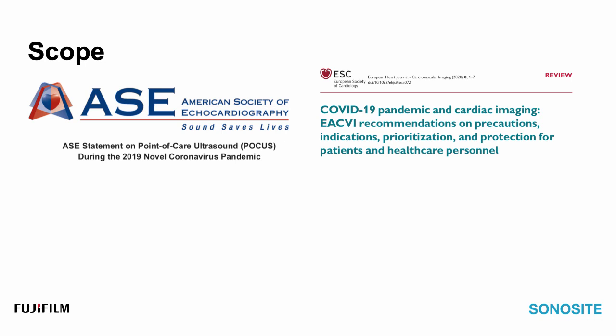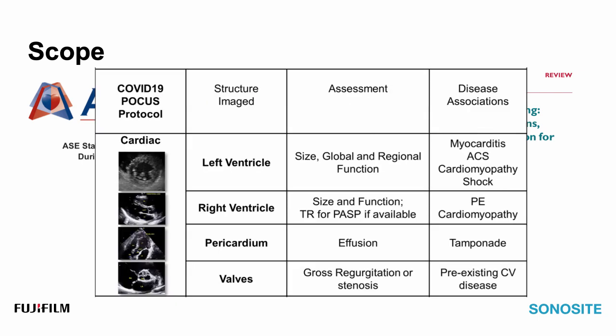In terms of what we should be looking for in these patients, not a lot has really changed in my opinion; however, there have been contemporary guidelines produced in response to this pandemic by a couple of overarching echo and cardiovascular health societies. I'm going to borrow this table from the ASE document, which is quite nice, emphasizing the things we might be looking for in a goal-directed approach for the left ventricle, right ventricle, pericardium, and valves. We won't cover valves in detail, but I will have a short slide on them, as valves are not our immediate priority in these patients.